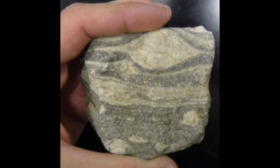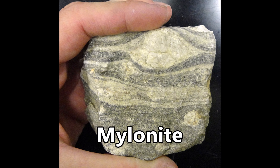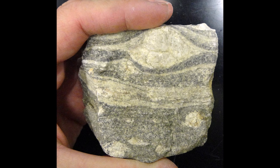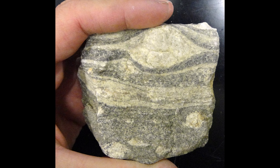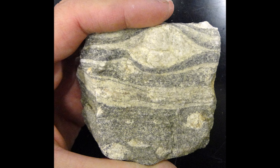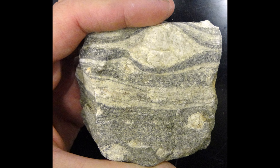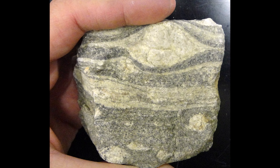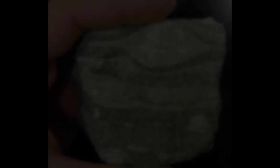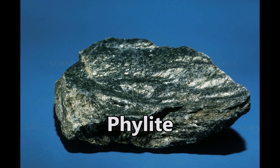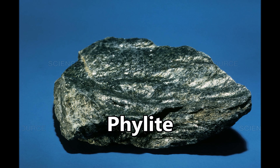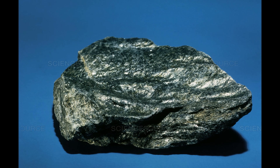Mylonite forms along deeply buried fault surfaces by crushing and stretching of rocks under such heat and pressure that the minerals deform in a plastic way. Phyllite is one step beyond slate in the chain of regional metamorphism.